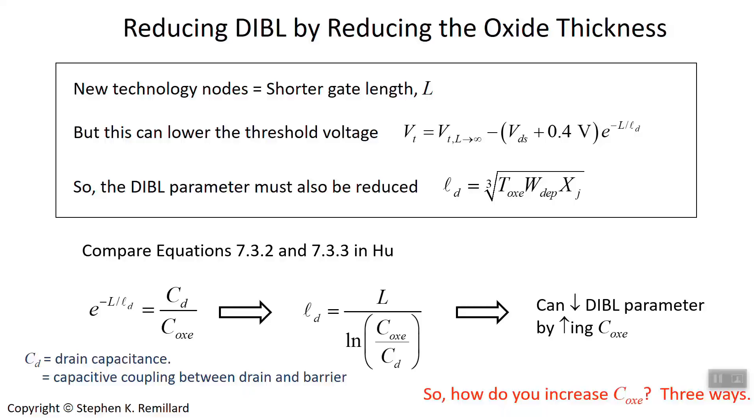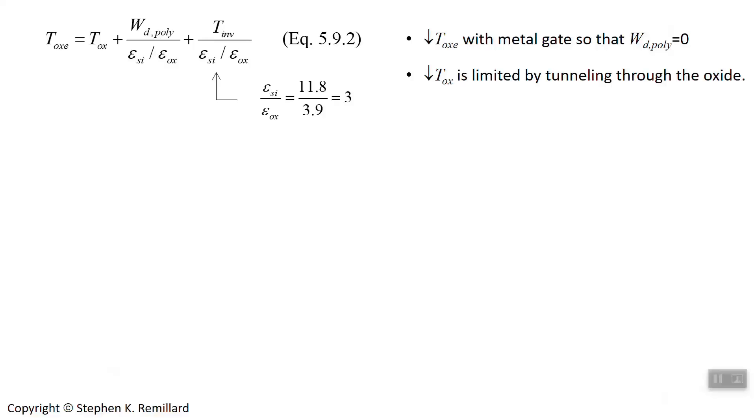Let's look at this expression that has been worked out for the effective thickness of the oxide. C sub Oxe is the dielectric constant of the oxide divided by this.